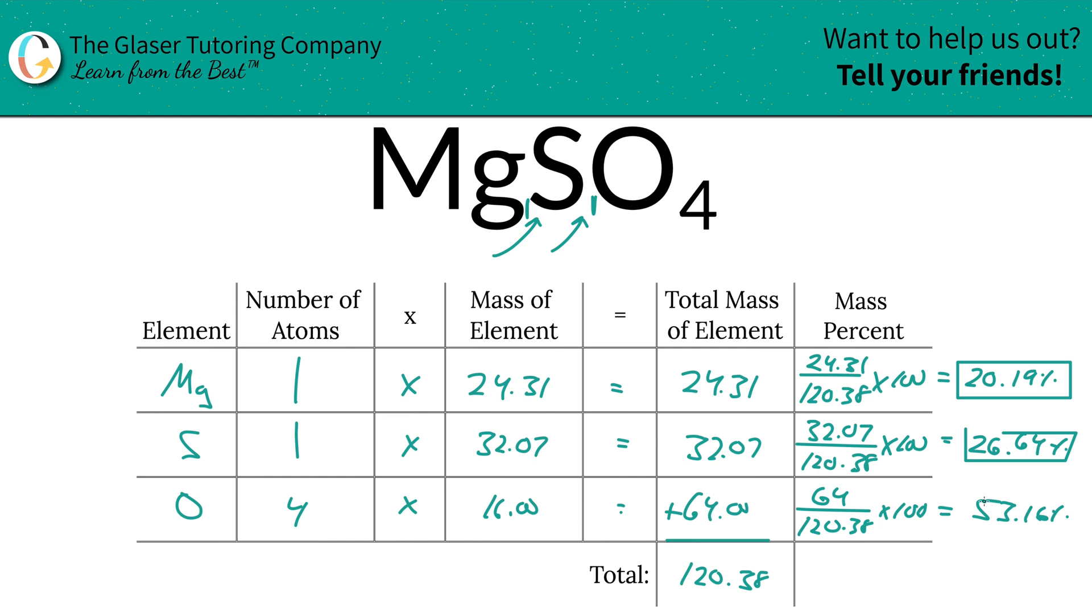You can always check yourself by simply adding these together, and what it should equal is then 100.